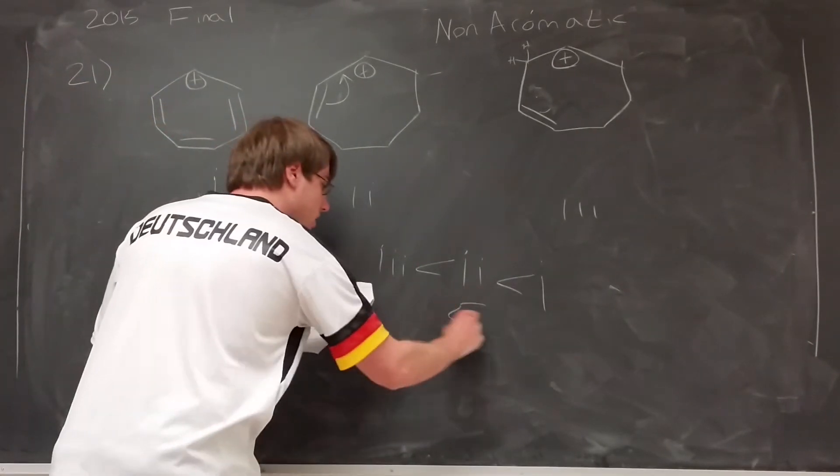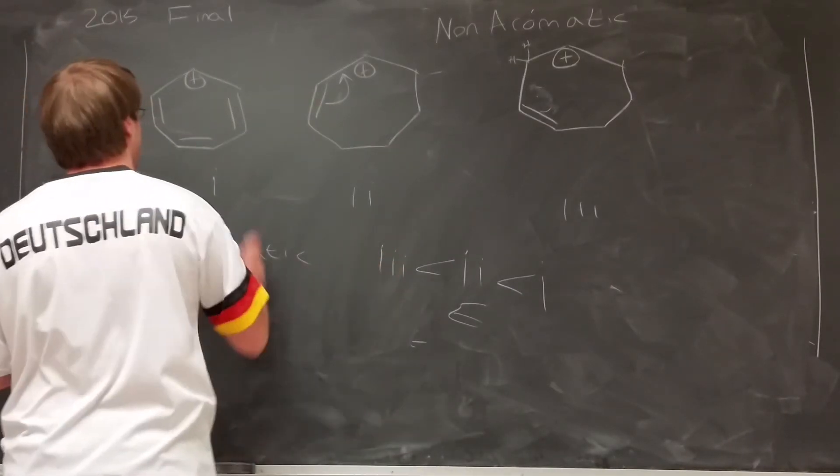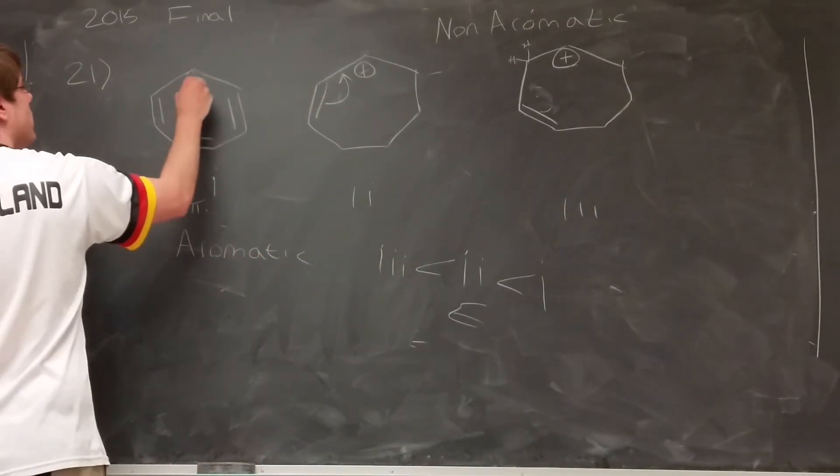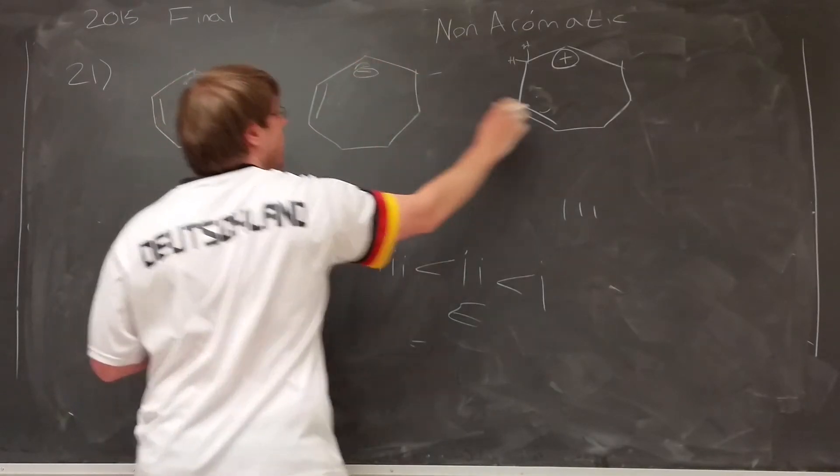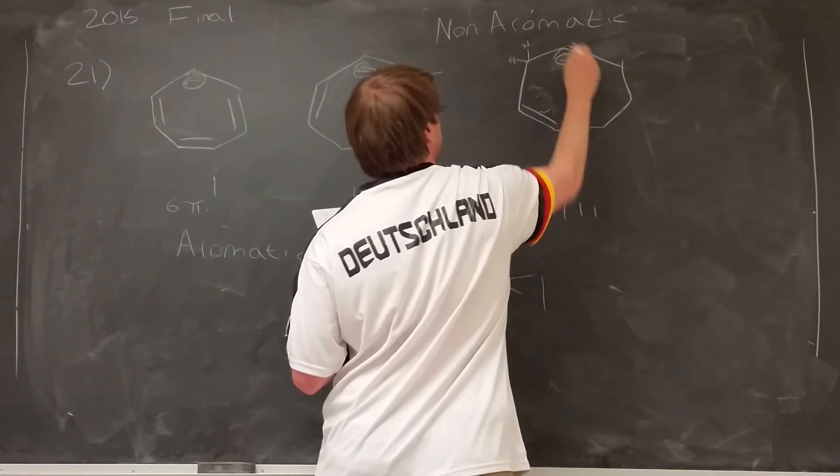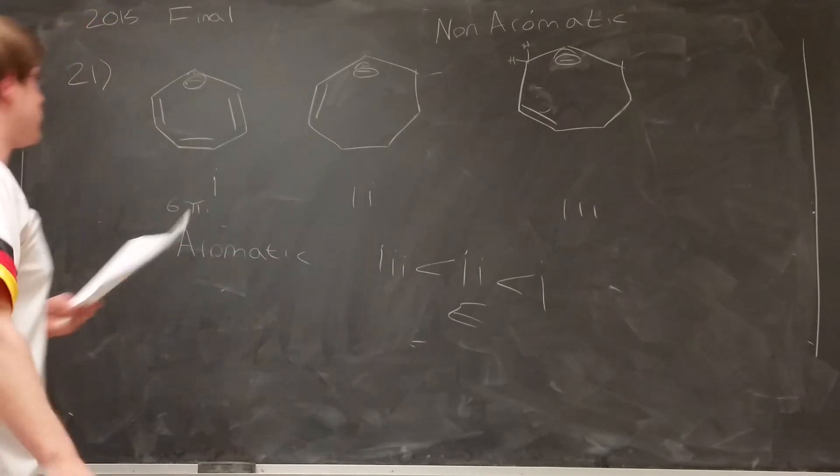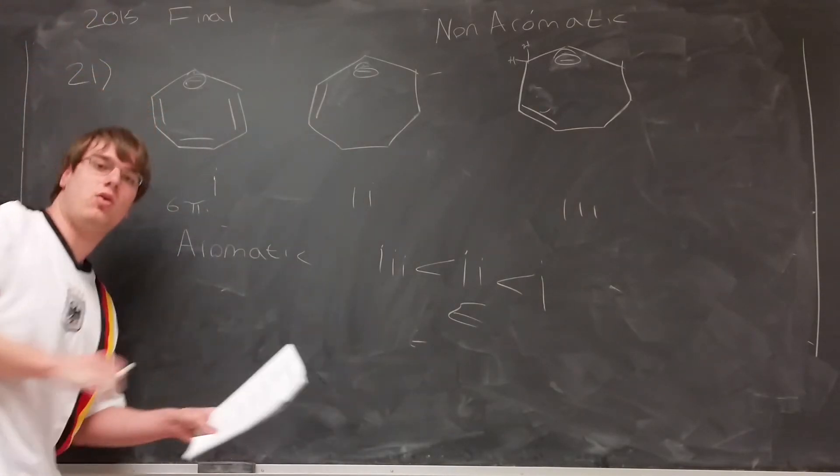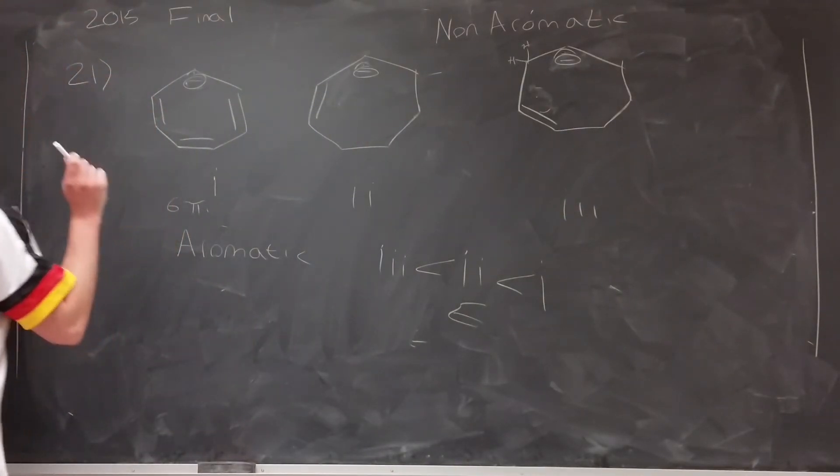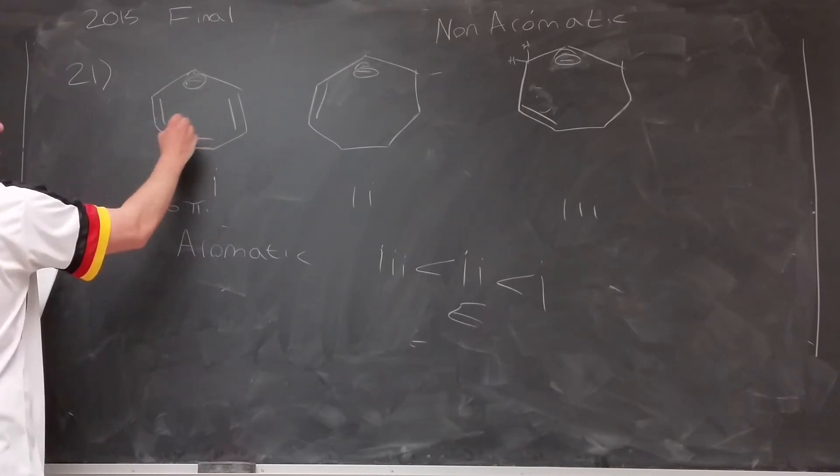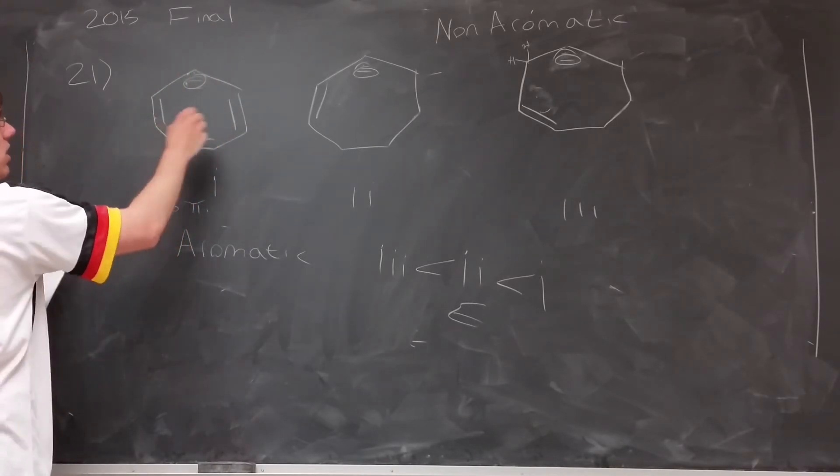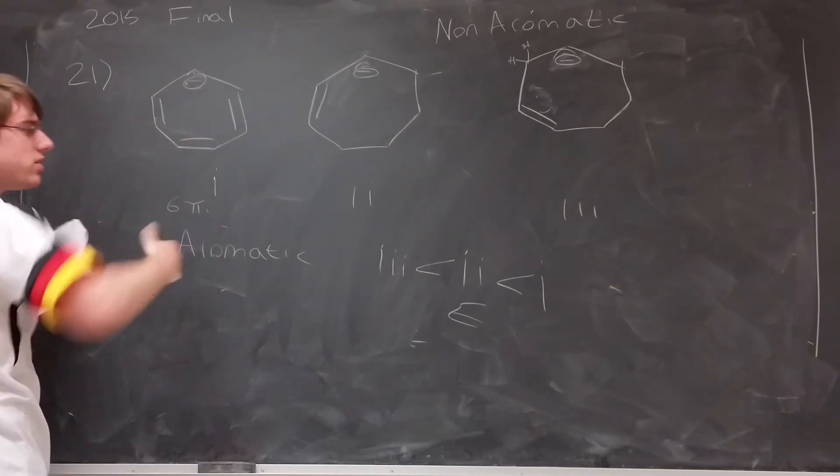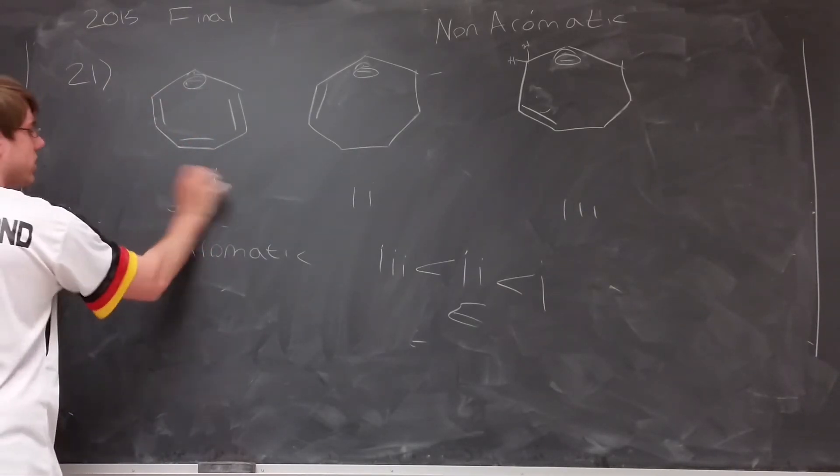But what if these were negative charges? What if this was a negative charge here, and this was a negative charge here, and this was a negative charge here? Well, now we're going to do the same thing, and again, it's still a question about aromaticity, just slightly different. Now I have a negative charge, and I see it's fully conjugated. Every carbon has a double bond or a charge or a lone pair. So it's fully conjugated, it's a ring.